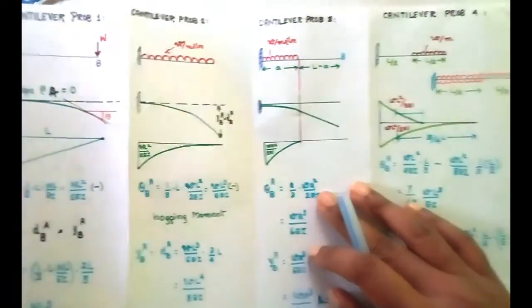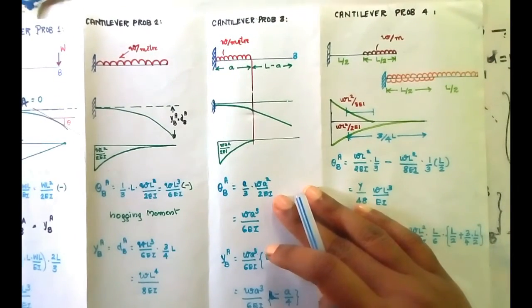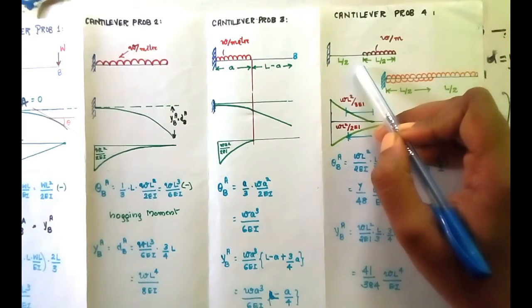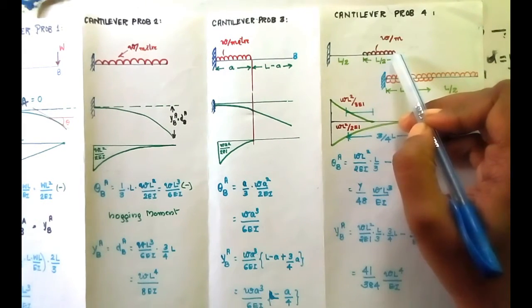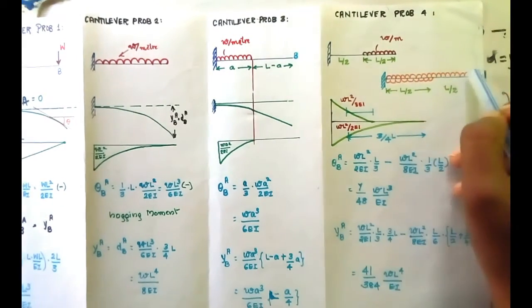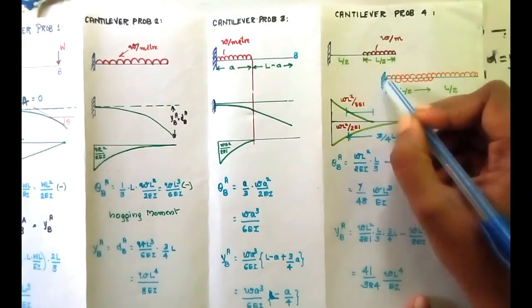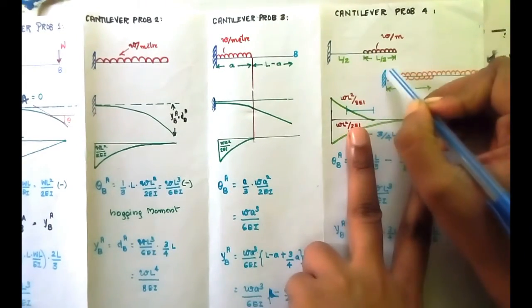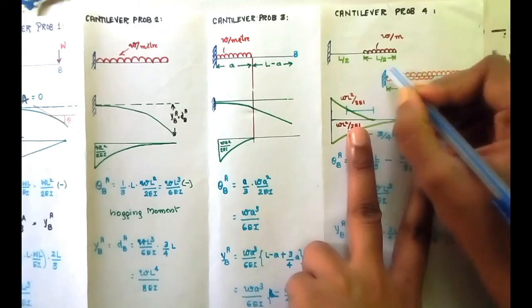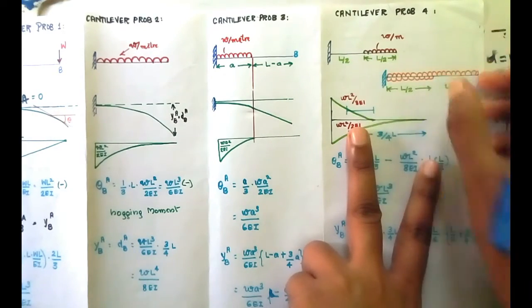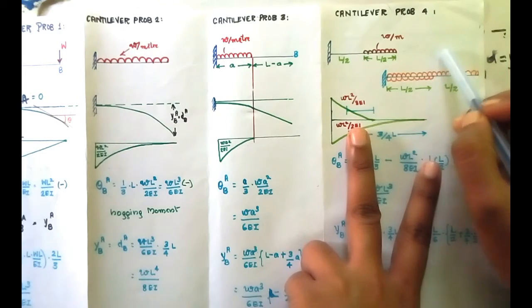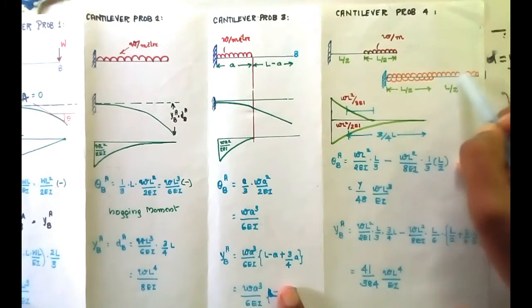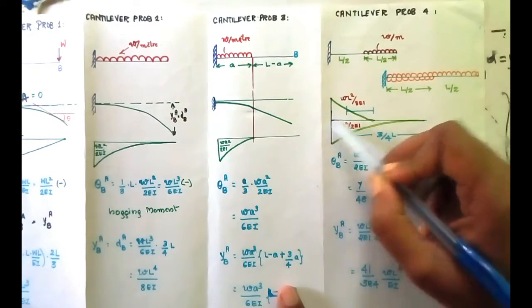The next problem is a slightly tricky one, similar to the previous problem — cantilever problem number 4. Here, a UDL is applied over the second half of the beam. To solve it, we draw the bending moment diagram in parts: first draw the bending moment diagram for the full-span downward UDL, then for the upward UDL over the first half.